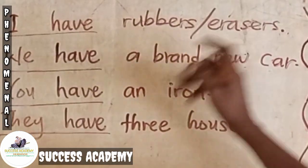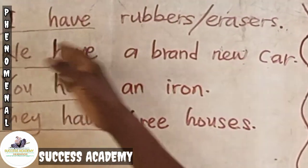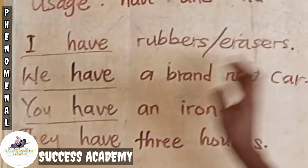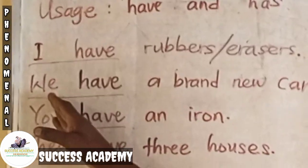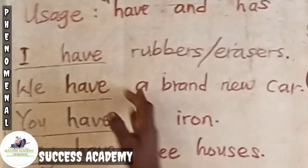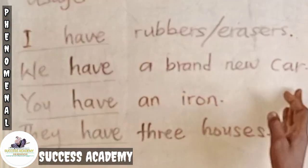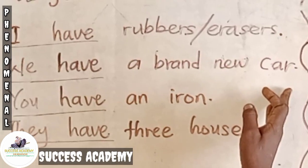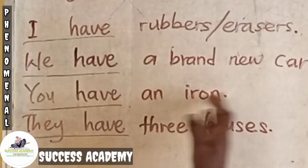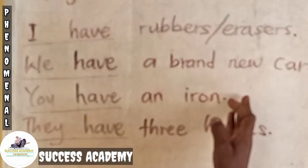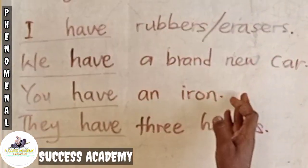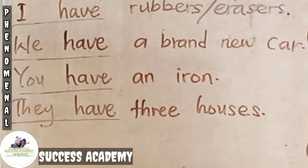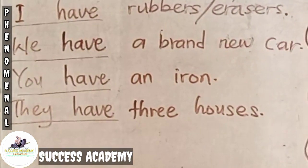So, returning to usage of have and has: I have a rubber or I have erasers. Example two: We have a brand new car. Number three: You have an iron. And the last example: They have three audits.